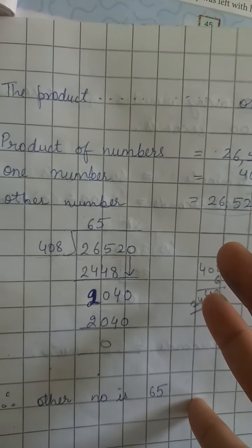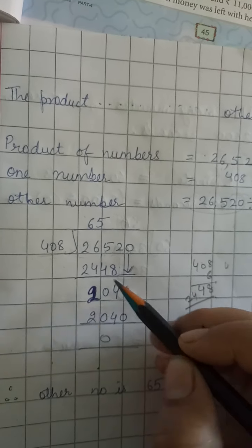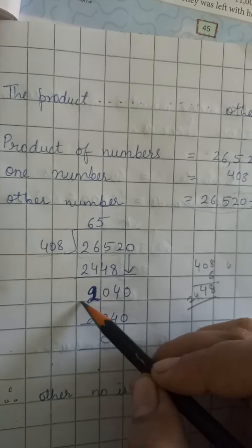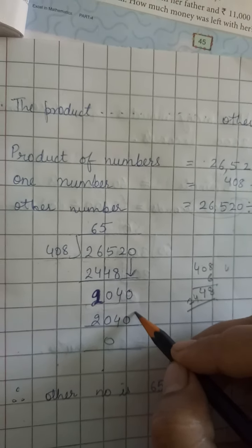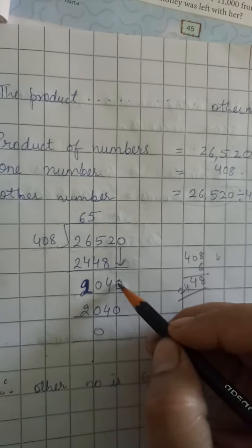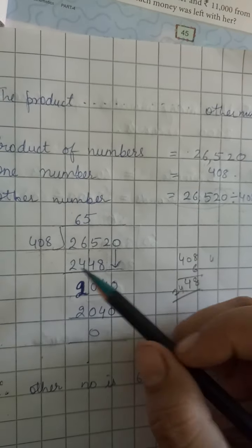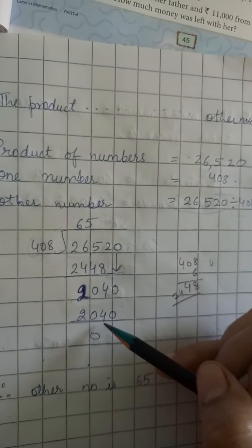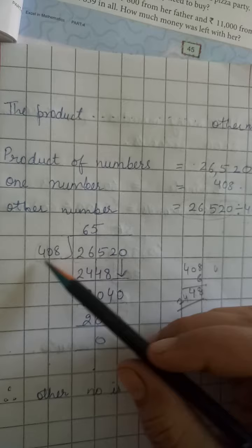Now we are left with 0, we will bring down 0. Since 204 is not divisible by 408, so we will bring down 0. Now 408 - how will we check? 4 × 5 is 20, first two numbers divide. It is equal, so we will multiply 408 by 5 and check.